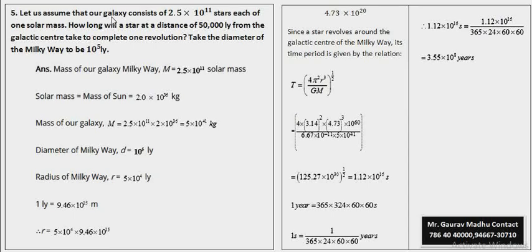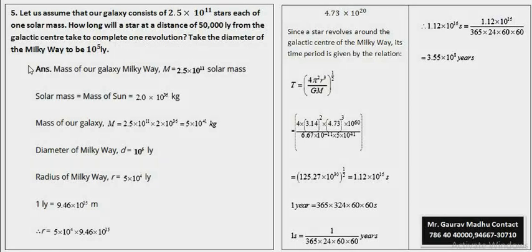Let us assume that our galaxy consists of 2.5 x 10 raised to power 11 stars, each of one solar mass. How long will a star at a distance of 50,000 light years from the galactic center take to complete one revolution? Take the diameter of milky way to be 10 raised to power 5 light years.